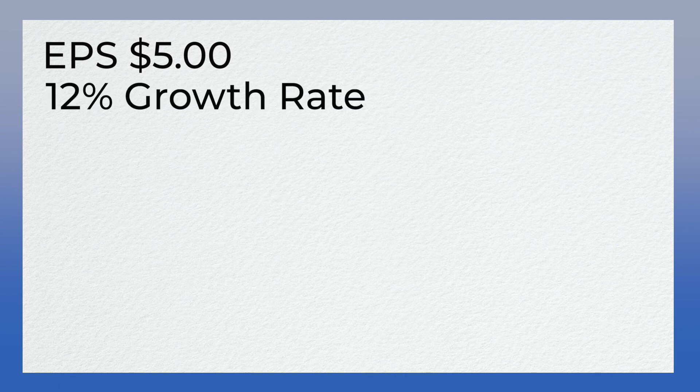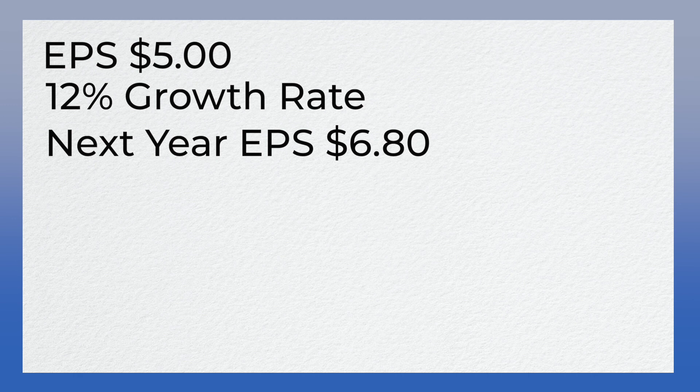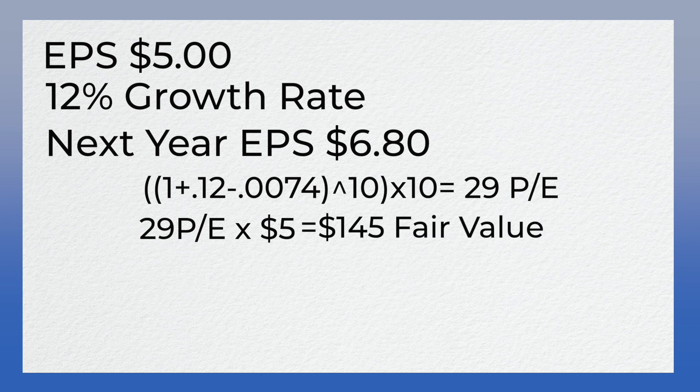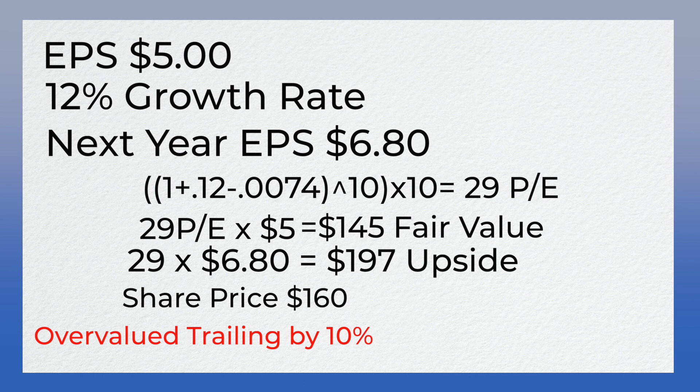Let's put it all together. Say we have a stock that earned $5 per share over the last year, we expect 12% growth, and analysts project $6.80 earnings next year. A 12% growth rate gives us a fair PE value of 29. So 29 times $5 equals a fair value of $145 per share based on trailing earnings. For forward earnings, $6.80 times 29 equals $197 upside. If the share price is currently $160, it looks overvalued on trailing earnings, but because next year's upside is $197 per share, it's probably not a great idea to sell — the valuation will catch up.